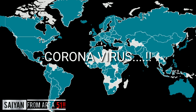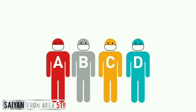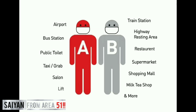With coronavirus, we have four groups of people: A, B, C, and D. Group A are the first carriers — they are easy to find and mostly cured. This group A goes out to find C, passing by the stranger B in public. A and B don't know each other. A can pass by B in many public locations: the airport, bus station, public toilet, etc.